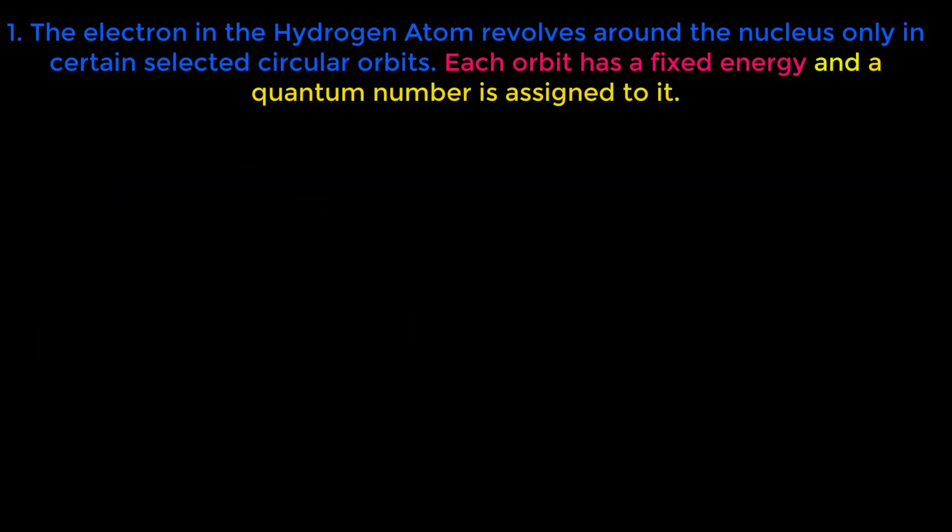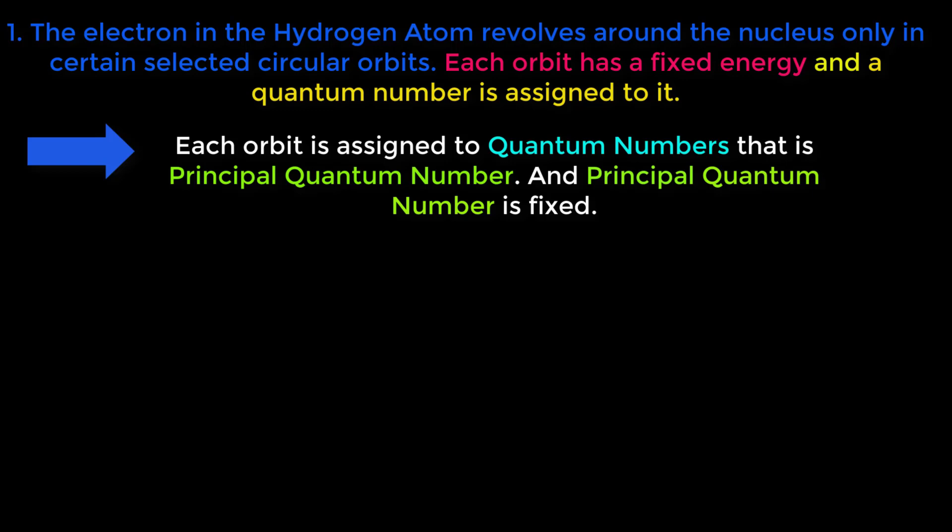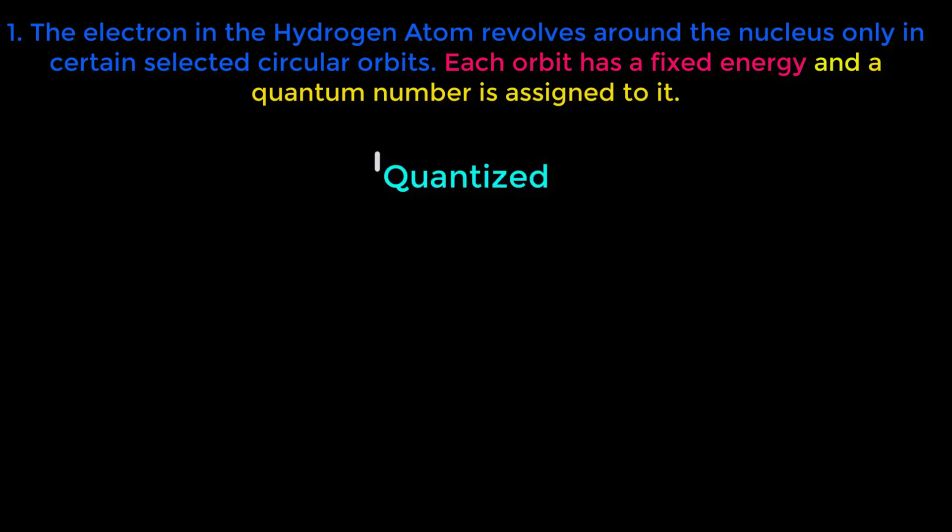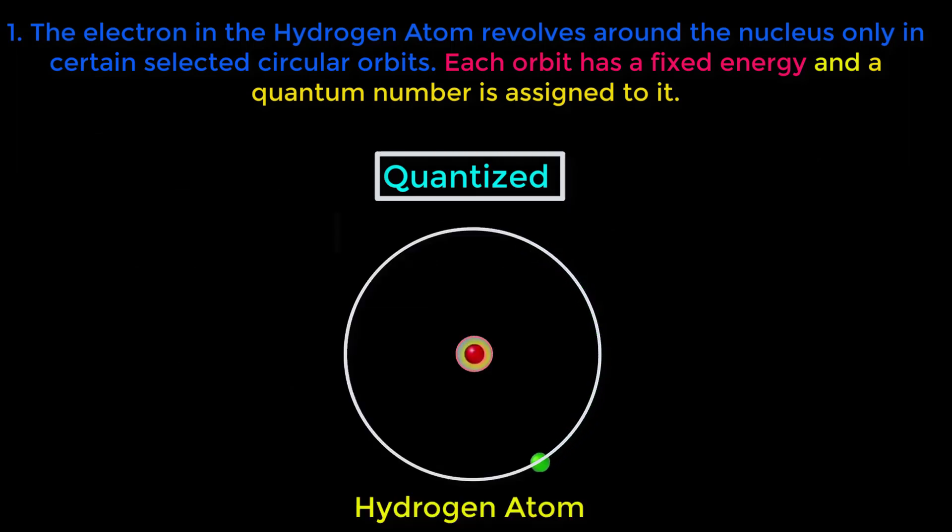So, from the discussion, we have got each orbit is assigned quantum numbers, that is principal quantum number and principal quantum number is fixed. Each orbit has fixed energy and distance of each orbit from nucleus is fixed. This fixed, this fixed and this fixed all together indicate one word and the word is quantized. That means electron revolves in quantized orbits outside nucleus.